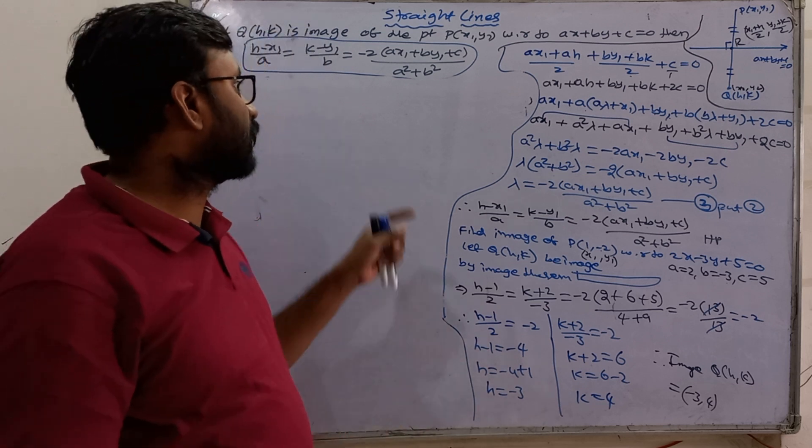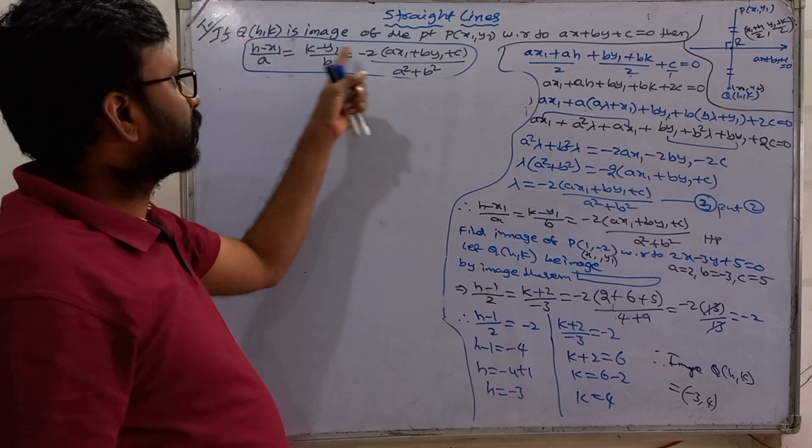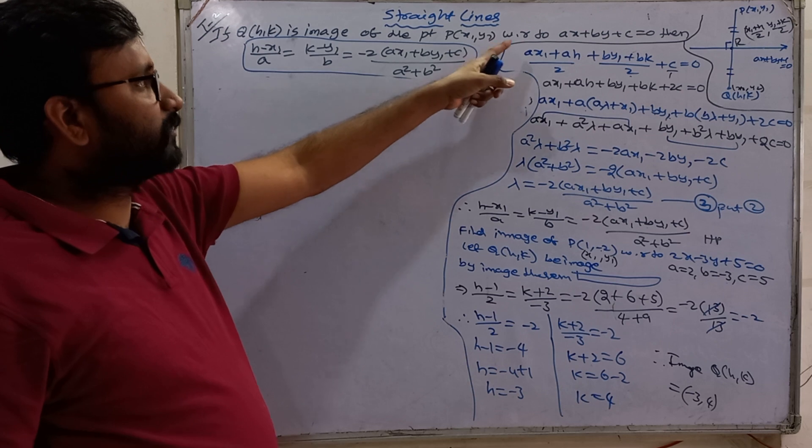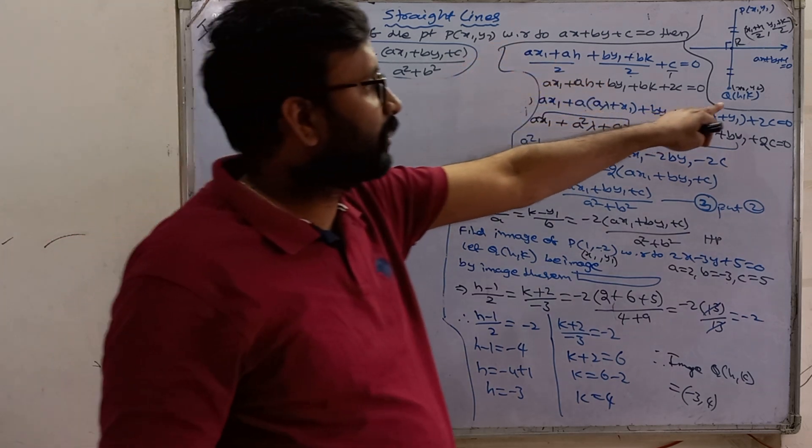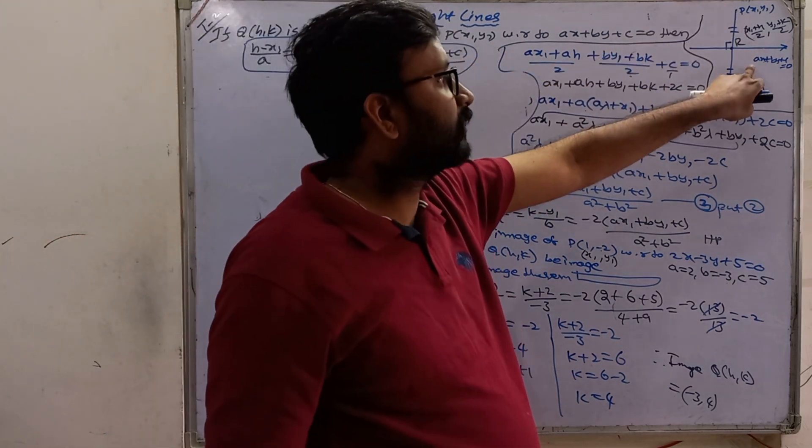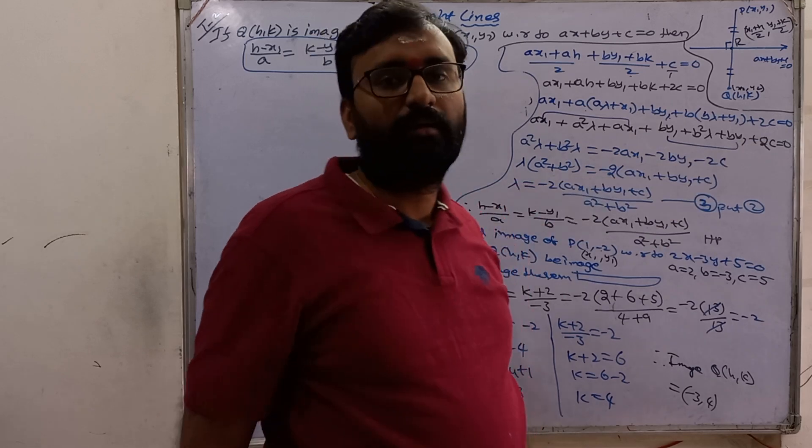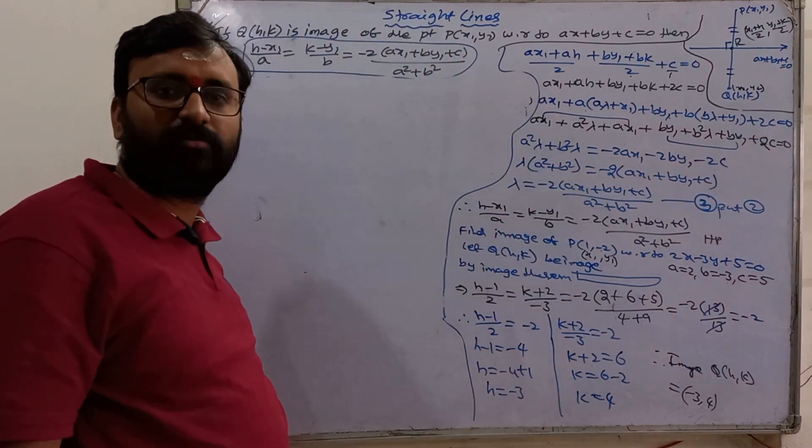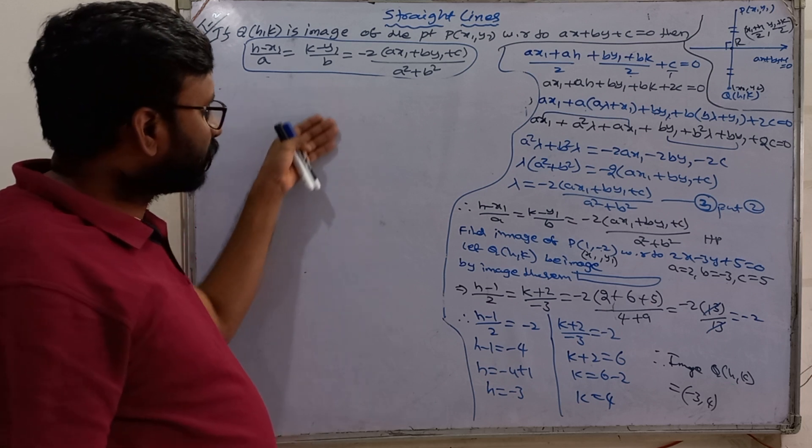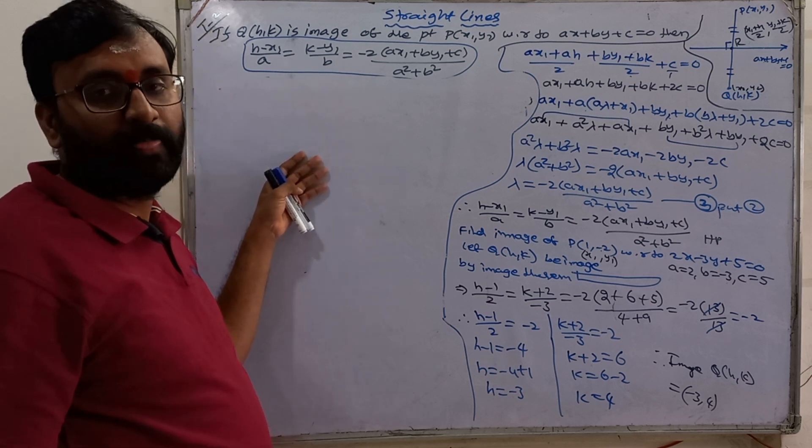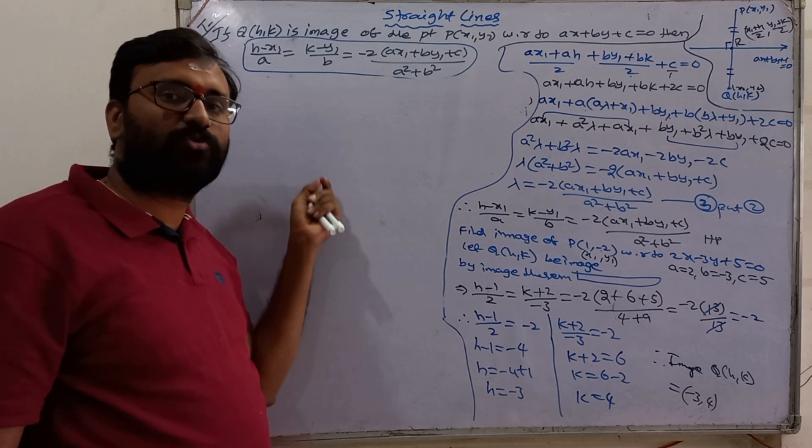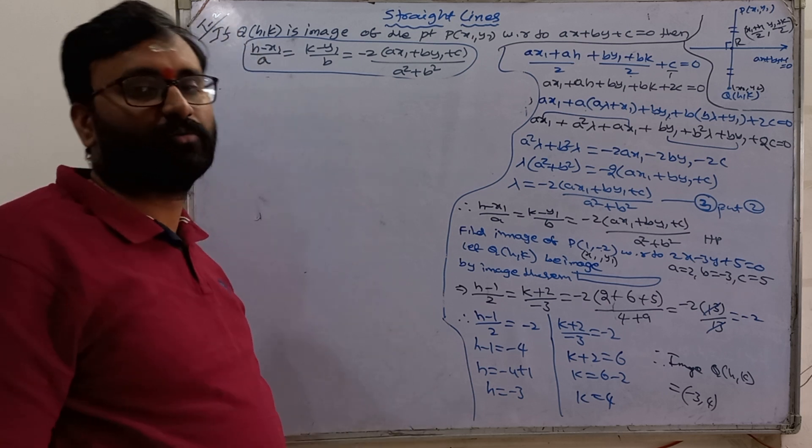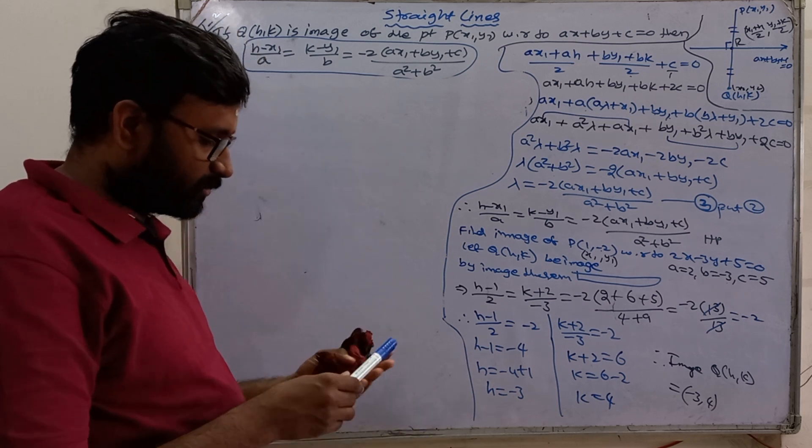So we can prove the image theorem. Q is the image of the point P(x1, y1) with respect to the line. P and Q are the image with respect to the line. This is the proof. This is the direct method. Product of slope is equal to minus 1. This is the direct of foot. This is the first thing.